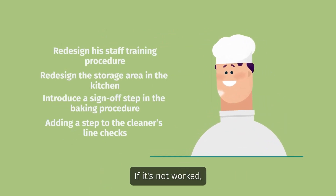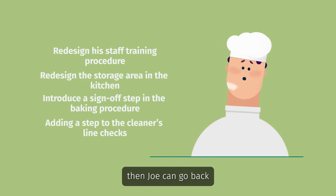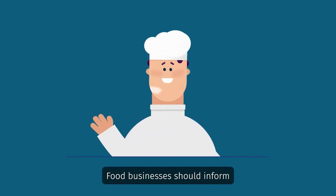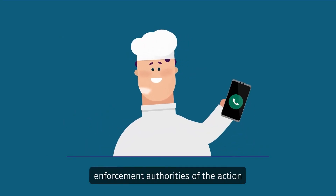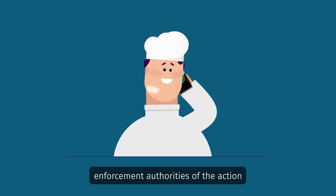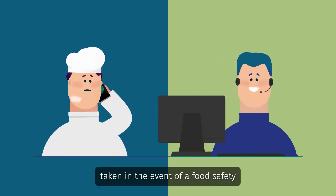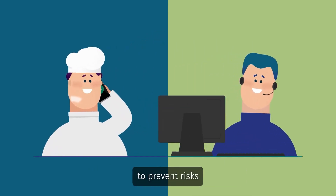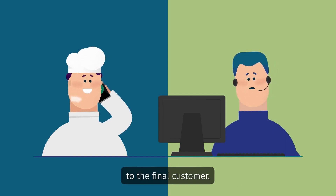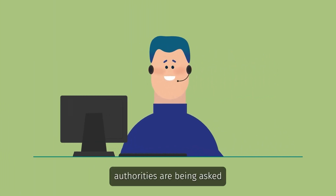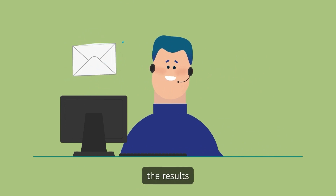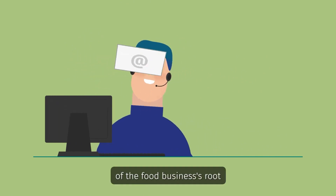If it hasn't worked, then Joe can go back and investigate further. Food businesses should inform enforcement authorities of the action taken in the event of a food safety incident to prevent risks to the final customer. Enforcement authorities are being asked to forward the results of the food businesses' root cause analysis.